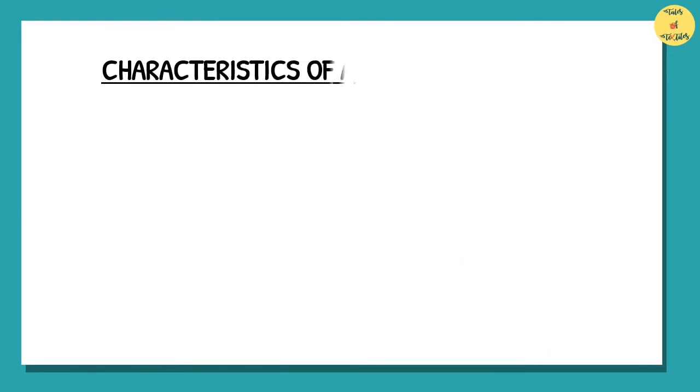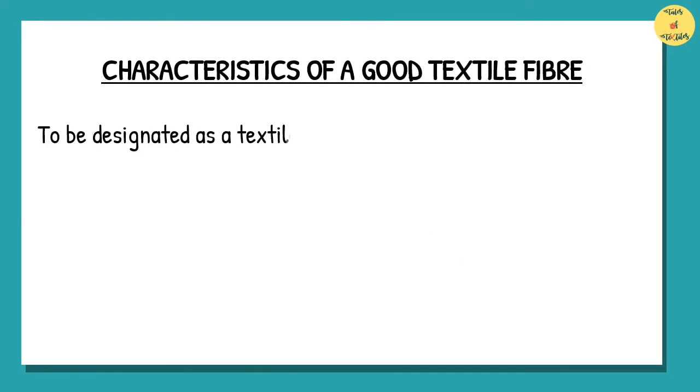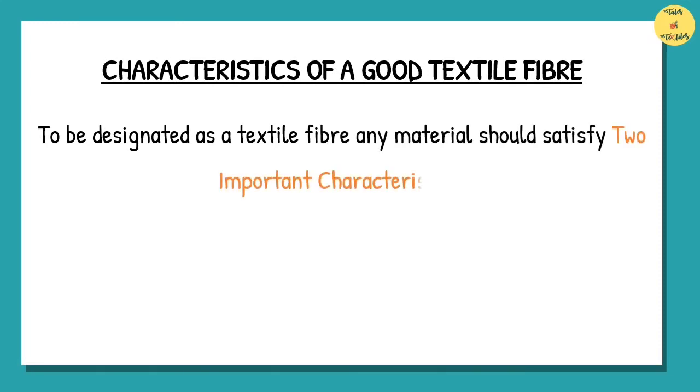Characteristics of a good textile fiber. To be designated as a textile fiber, any material should satisfy two important characteristics, namely, the essential or primary properties and the desirable or secondary properties.